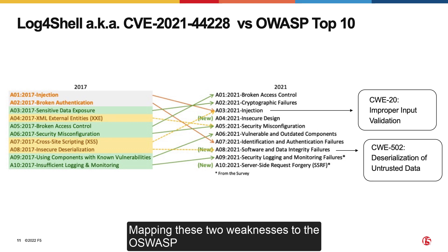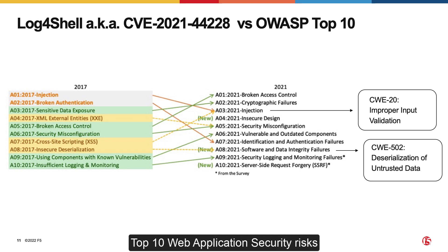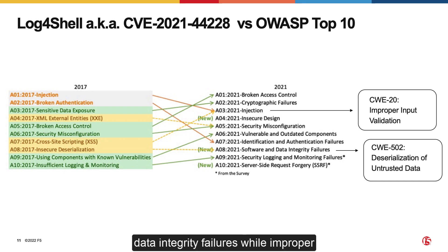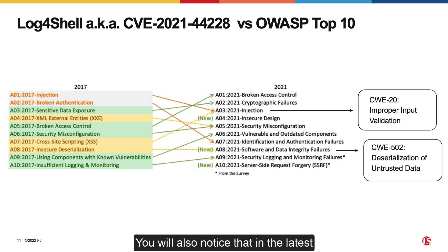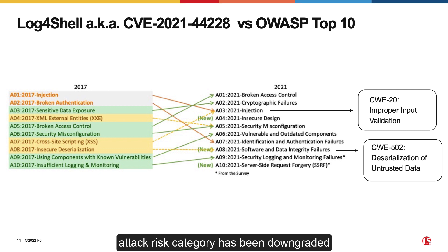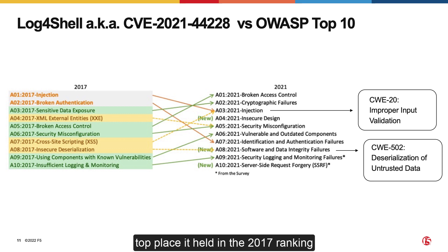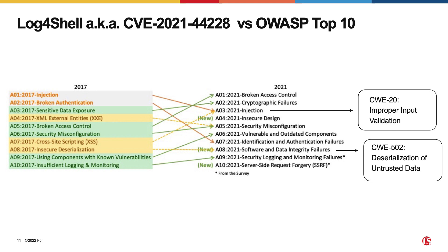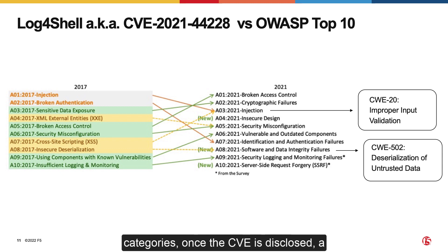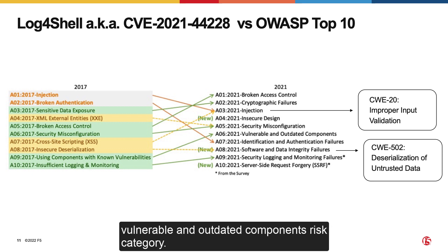Mapping these two weaknesses to the OWASP Top 10 web application security risks, you will notice that deserialization of untrusted data maps to software and data integrity failures, while improper input validation maps to injection risks. You will also notice that in the latest 2021 version of OWASP Top 10, the injection attack risk category has been downgraded to the third position compared to the top place it held in the 2017 ranking. But the Log4Shell attack proves how dangerous these vulnerabilities still are. Besides these two initial risk categories, once the CVE is disclosed, Log4Shell makes its way into the vulnerable and outdated components risk category.